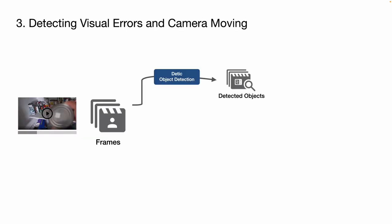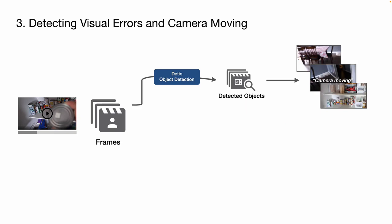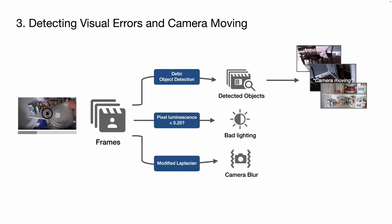From the footage, AVScript also detects visual errors and camera movement. First, we use the object detection results to find frequent changes in the object set over time, which commonly happens between scene labels. Next, to detect bad lighting, we classify the frame as dark if the mean pixel luminance value falls below an empirically set threshold of 0.25. To detect blurry frames, we use the modified Laplacian method. After converting each frame to grayscale, we classify the frame as blurry if the focus score falls below an empirically set threshold of 5.